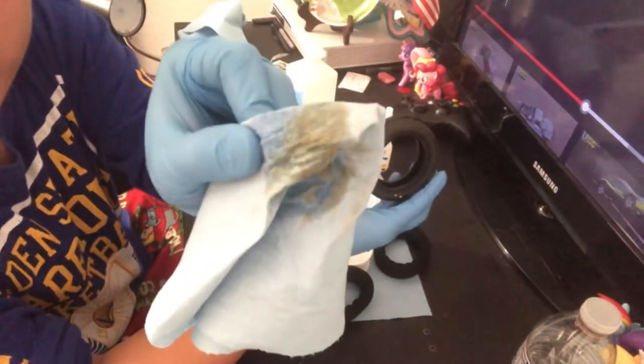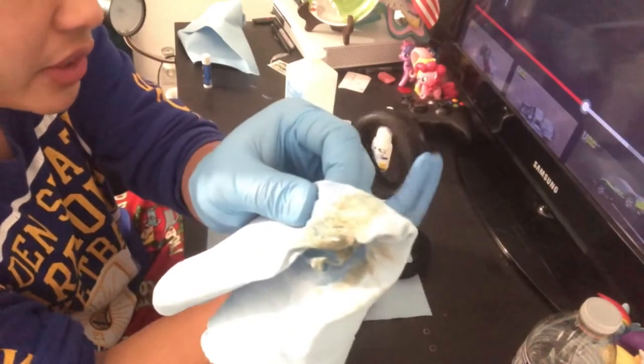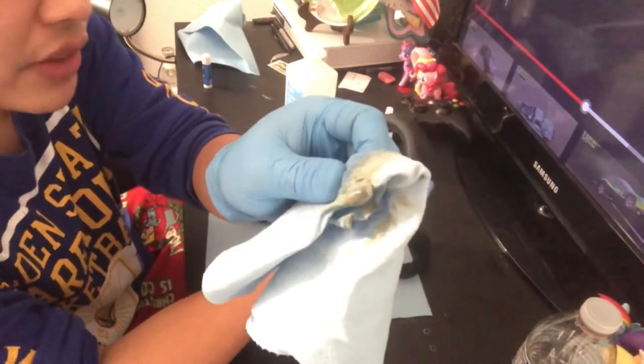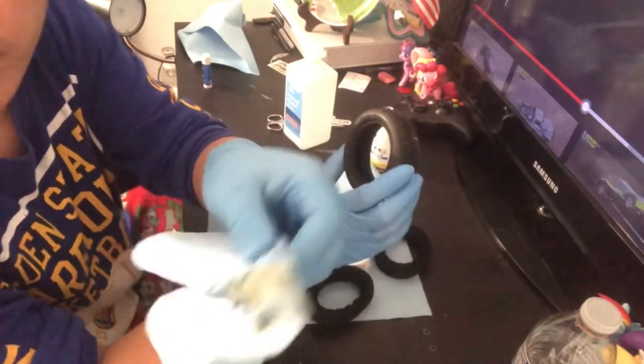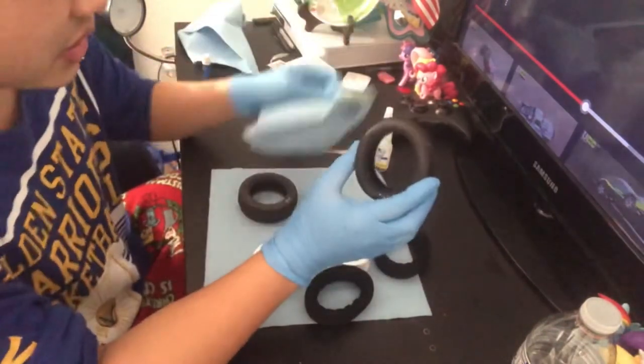Look at that nasty stuff right there. I'm not too sure that's mold release, but I noticed the tire was kind of yellowed on the side. It's just kind of disgusting, looks like somebody vomited.